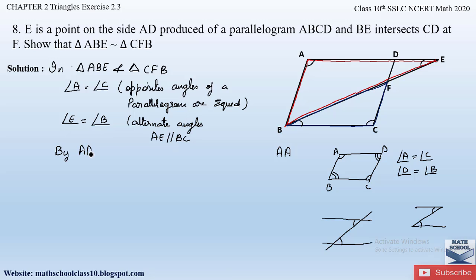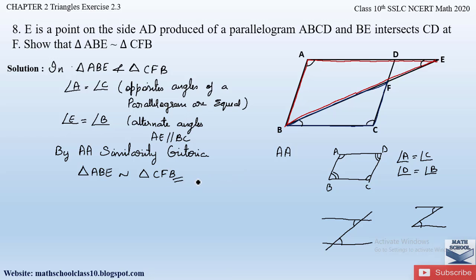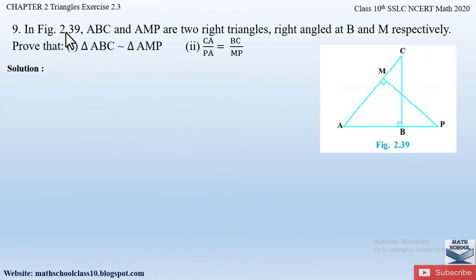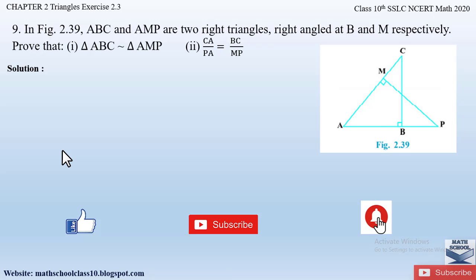This is quite straightforward. The key is to draw the figure according to the given statement, identify which angles are equal in the two triangles, then apply the similarity criteria to prove the triangles similar. If you have any doubts, comment below. In my next video I'll solve question nine from Exercise 2.3. Do like, subscribe, and hit the bell button to get the latest updates as I complete the whole syllabus for Class 10. Thank you.